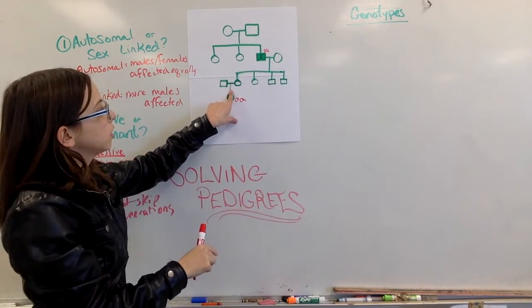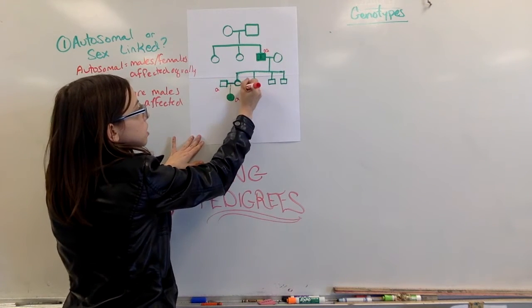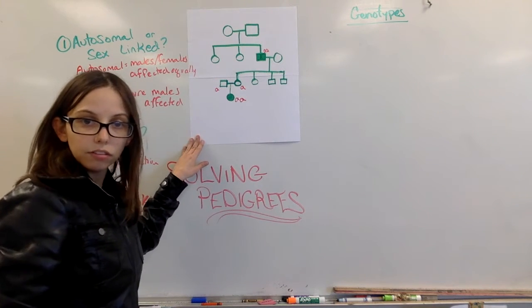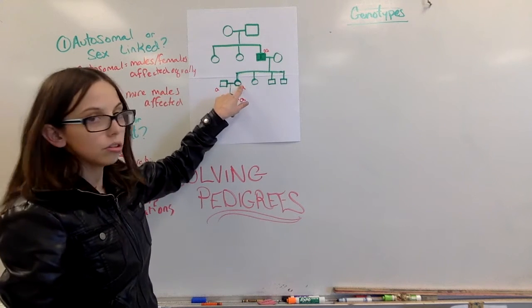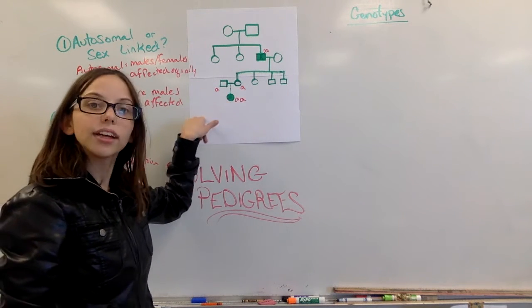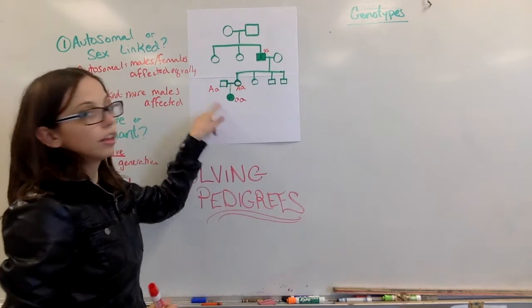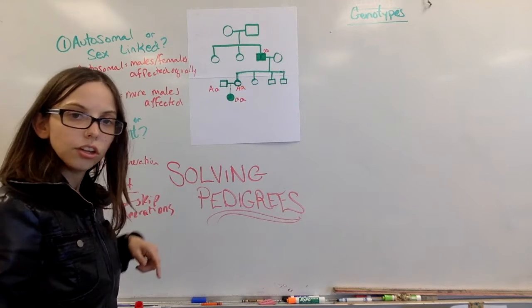So I go back. That means both these parents have at least one recessive allele. That's halfway done. Well, they don't show the trait, but they carry the recessive allele. That means they must have a dominant one that hides it. So I can fill that in as well. Now I have that little family genotypes.